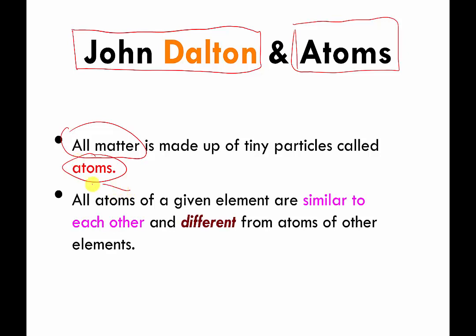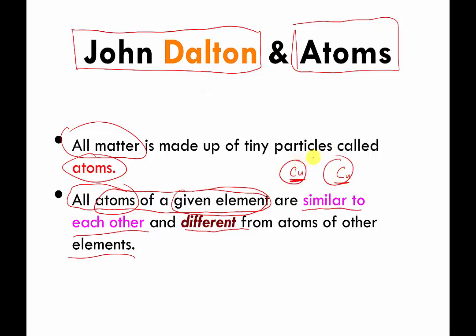Second thing he said is that there are different elements, and all atoms that are the same element are similar to each other and they're different from atoms of other elements. In other words, he said there's a copper atom and I'm going to abbreviate it Cu. And if I have another copper atom over here, these two guys are similar to each other and they're different from, let's say, an oxygen atom which I'm abbreviating with the letter O because that's the symbol for oxygen.